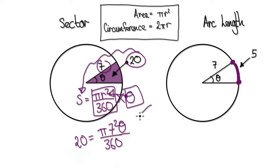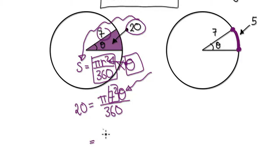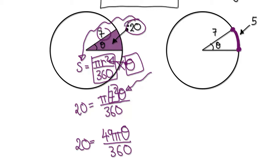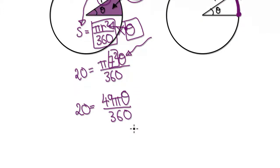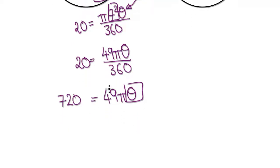Remember, our job is to work out theta. This then becomes 49, because 7 times 7 is 49. Number always first, so it's going to be 49πθ / 360 equals the area, which is 20. Now it's just a matter of working out theta. Times both sides by 360, so that would be 720 over 49π, theta. Now divide both sides by 49π.